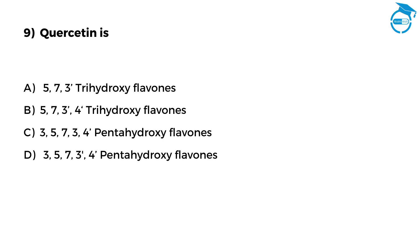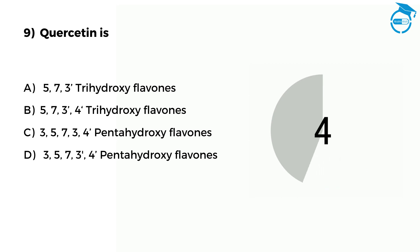Here is the next one. Quercetin is: Option A: 5,7,3-trihydroxyflavone. Option B: 5,7,3,4-tetrahydroxyflavone. Option C: 3,5,7,3,4-pentahydroxyflavone. Option D: 3,5,7,3,4-pentahydroxyflavone. Post your answer in comments — only 7 seconds left. The right option is B, that is 5,7,3,4-tetrahydroxyflavone.